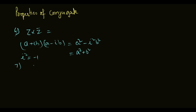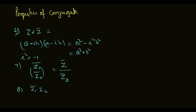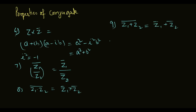The seventh property: the conjugate of z1 divided by z2 equals conjugate of z1 divided by conjugate of z2. The eighth and ninth properties: the conjugate of z1 plus z2 equals conjugate of z1 plus conjugate of z2. The tenth property: the conjugate of z1 minus z2 equals conjugate of z1 minus conjugate of z2.